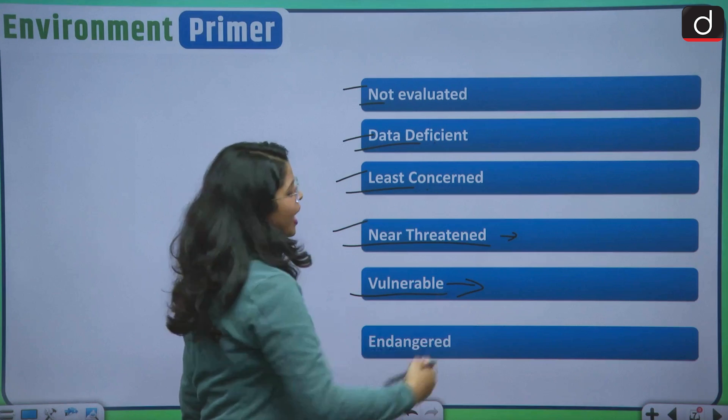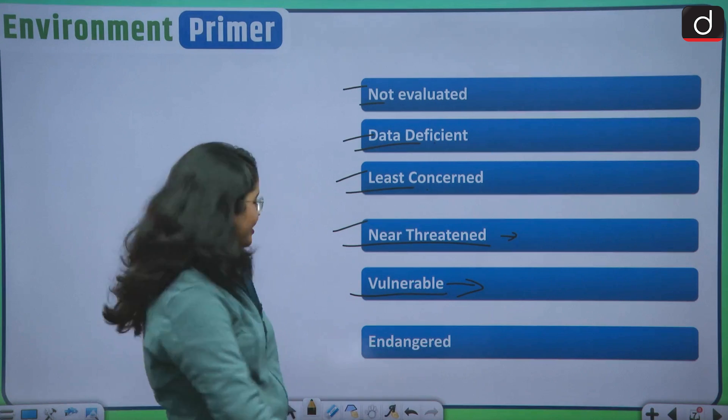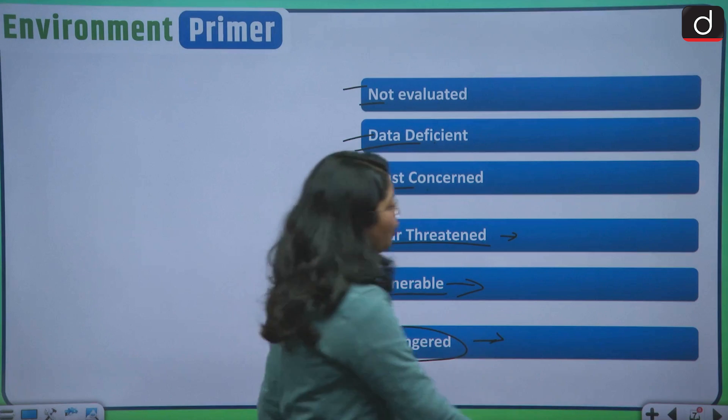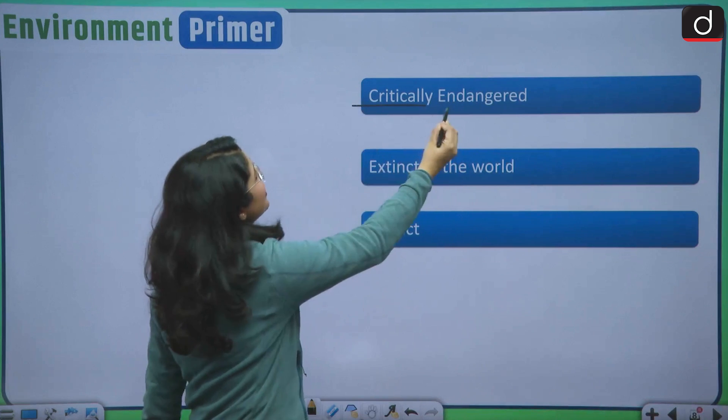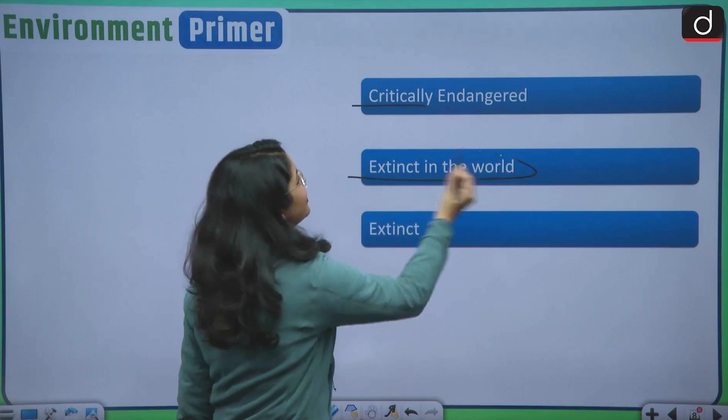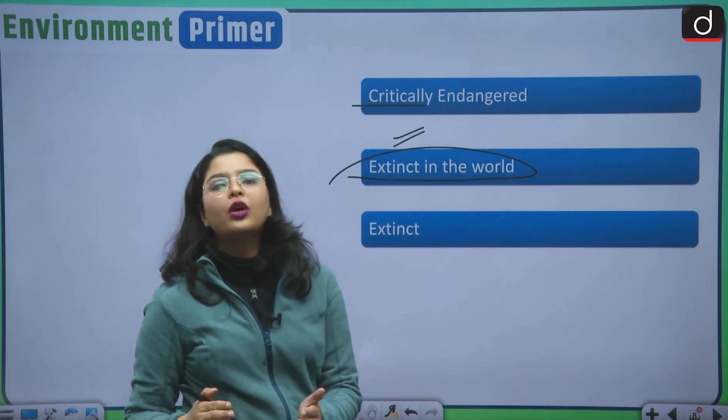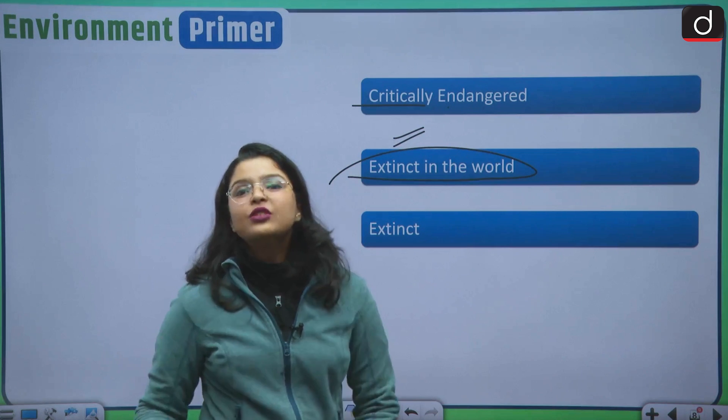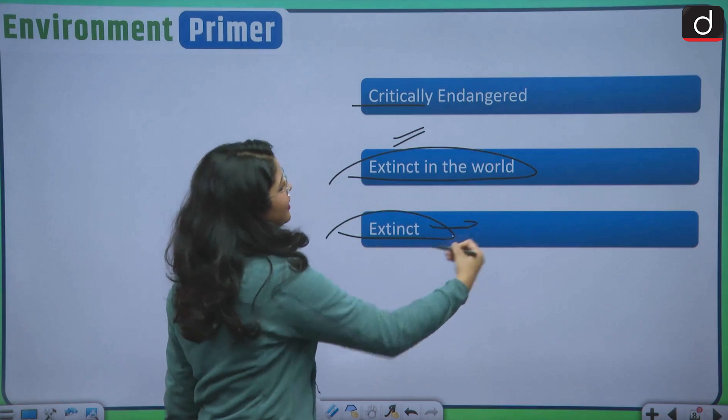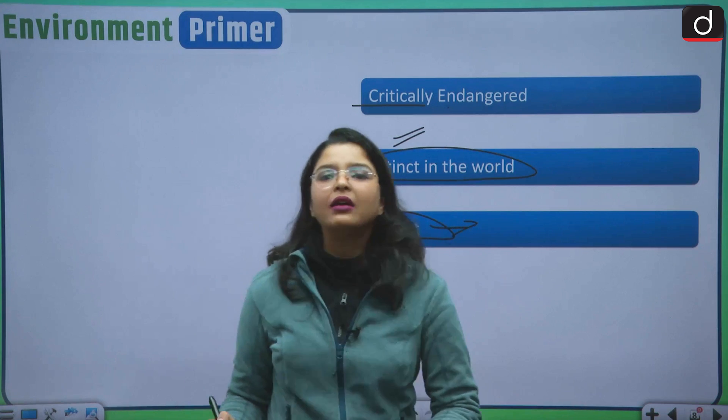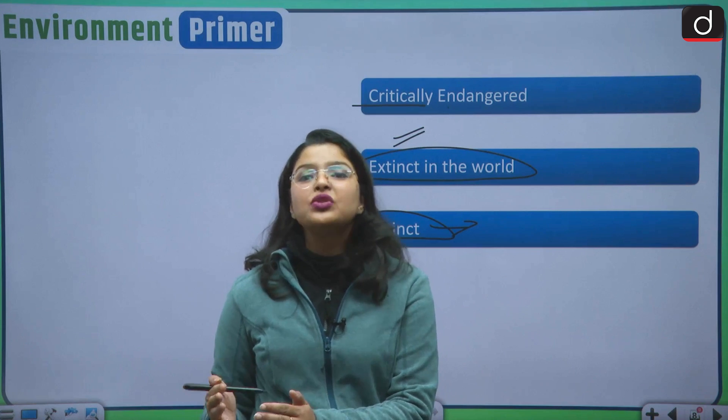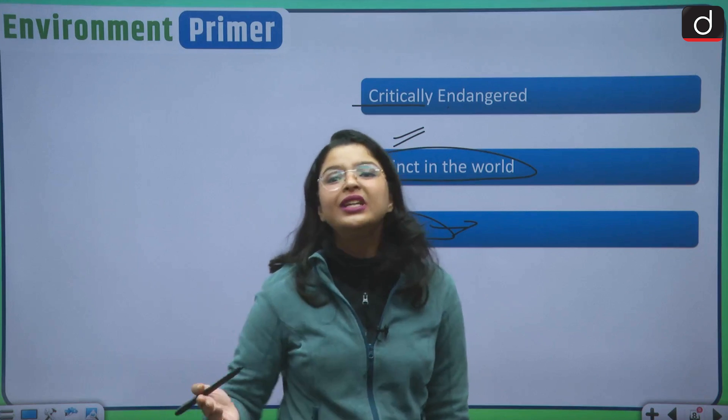Then there is vulnerable, even more higher risk of becoming endangered in the wild. Then endangered, high risk of becoming extinct in the wild. Then extinct in the world. This means that they are no longer occurring in their natural habitats. It is only possible to raise them in captivity. Then there is extinct category. That means they have already been depleted from our earth. They no longer exist on our earth. These are the categories on which the IUCN assesses the extinction risk of the species.